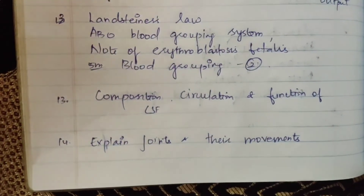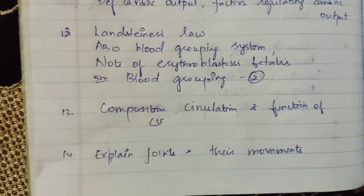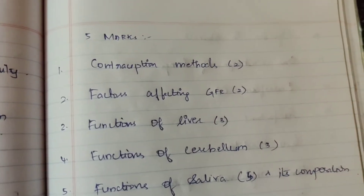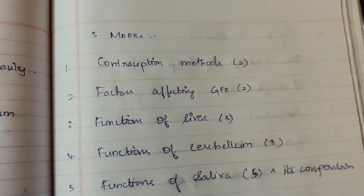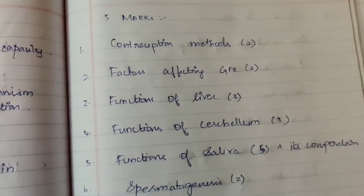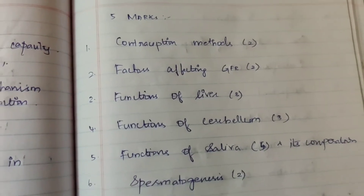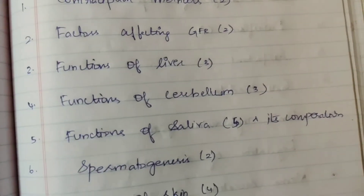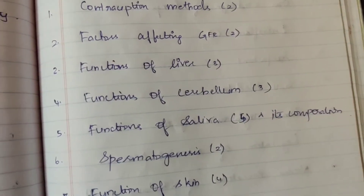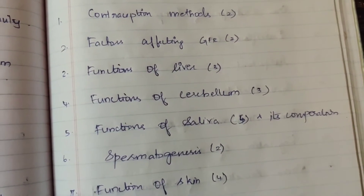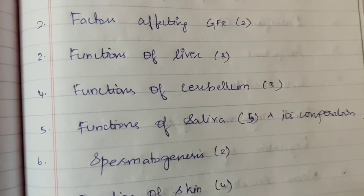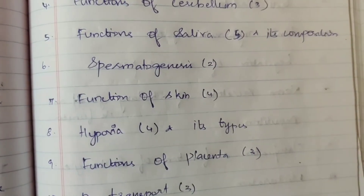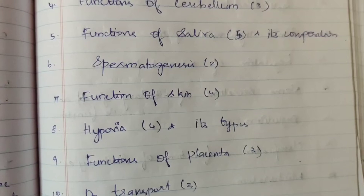This covers all 15-mark questions. As many as are repeated should be prioritized. Anatomy questions have already been uploaded in a separate paper — the link is added in the cards and description, so check that video. Now for 5-mark questions: first, contraception methods — 2 times. Second, factors affecting GFR (Glomerular Filtration Rate) — 2 times; you need to study the kidneys. Third, function of liver — 3 times.